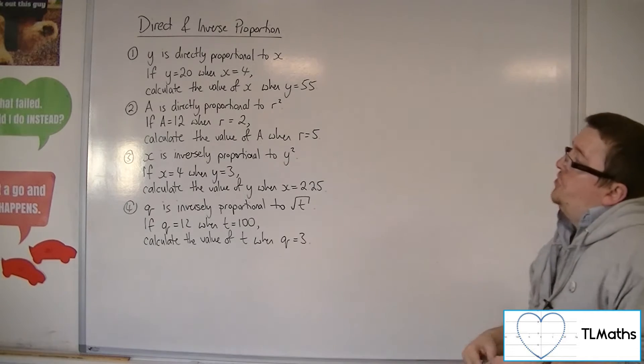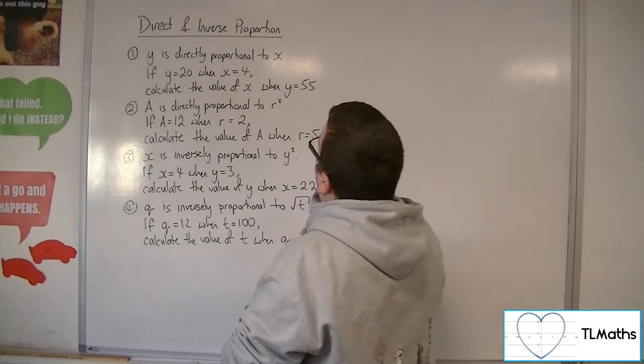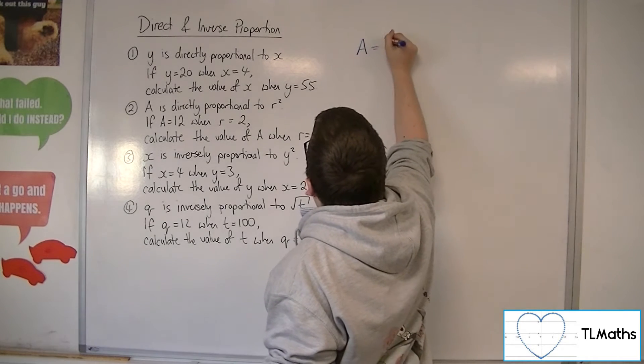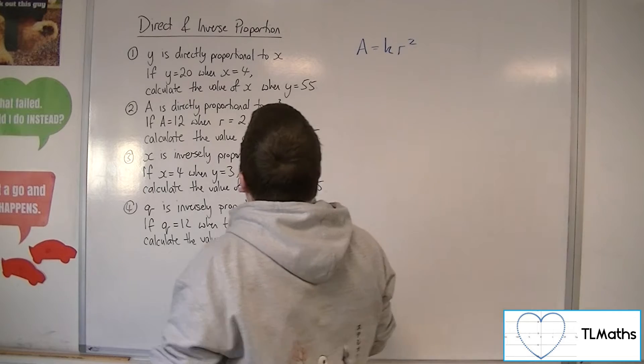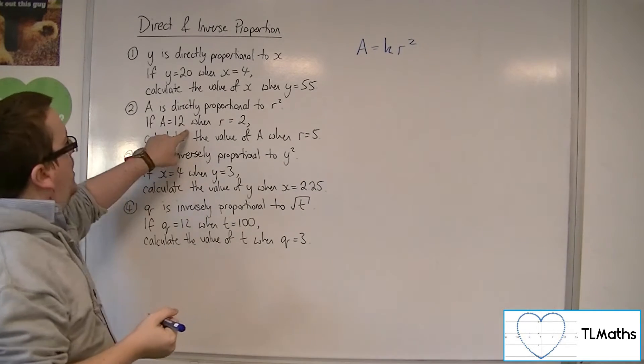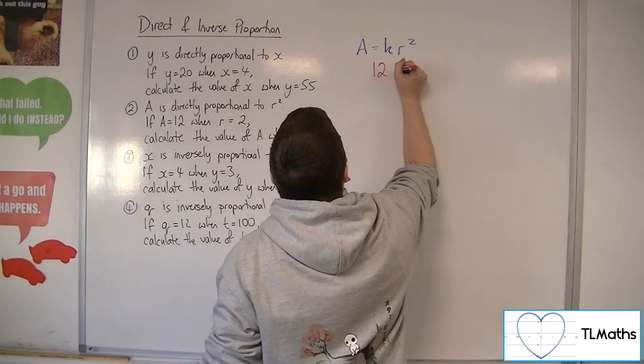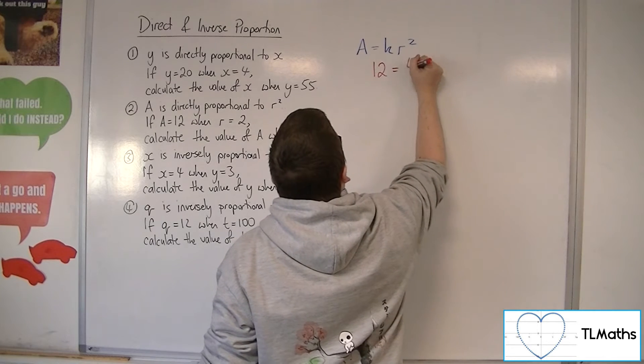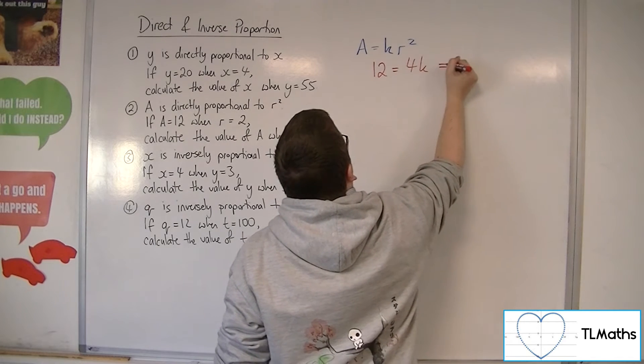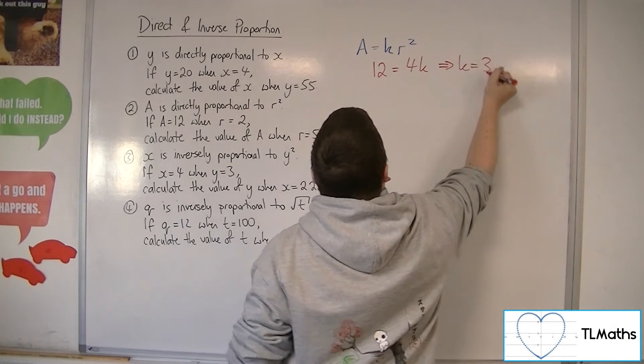Another example here, a is directly proportional to r squared. So a is equal to kr squared. If a is 12 when r is 2, so 12 is equal to 2 squared, so 4k. So k must be 3 in this case.